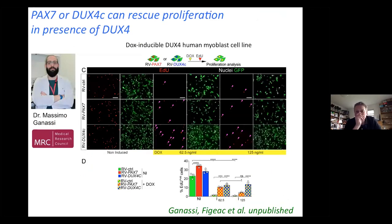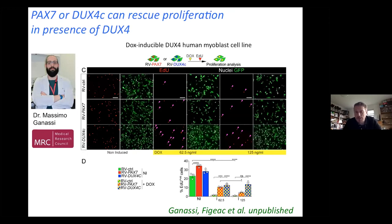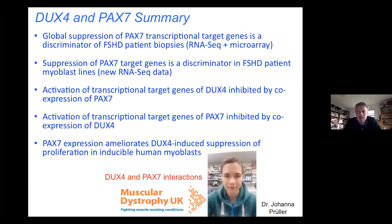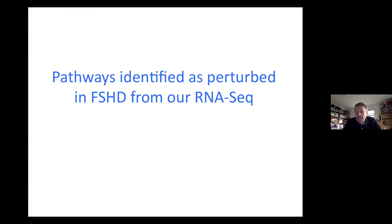Massimo in the lab is looking further into these interactions. If you have a cell expressing DUX4, it leads to stopping proliferation, causing apoptosis, inhibiting differentiation. DUX4C will help ameliorate this, as will PAX7 on proliferation. The presence of PAX7 can ameliorate the effects of DUX4 to a certain degree — they appear to compete and interact in some way. In summary, PAX7 target gene repression is a biomarker for FSHD, and PAX7 and DUX4 seem able to interact. So we're interested in which pathways are affected and whether we can affect satellite cells to improve regeneration, given that satellite cells may express DUX4 during regeneration, having deleterious effects on satellite cell activation, proliferation, and repair.